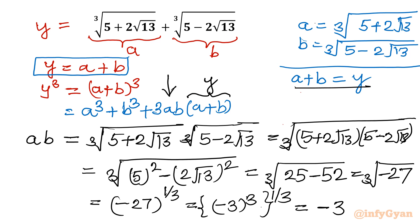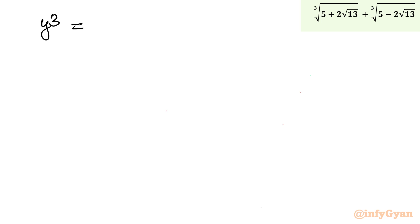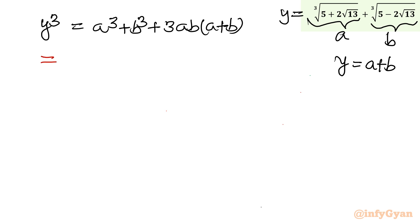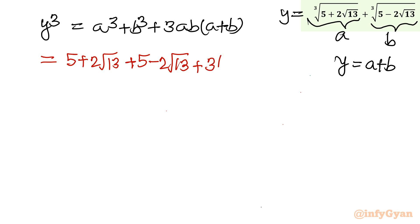Now let us put these values into the equation. We have y³ = a³ + b³ + 3ab(a + b). Here a³ = 5 + 2√13 and b³ = 5 − 2√13, so a³ + b³ = 10. Also a·b = −3 and a + b = y. So y³ = 10 + 3(−3)(y).